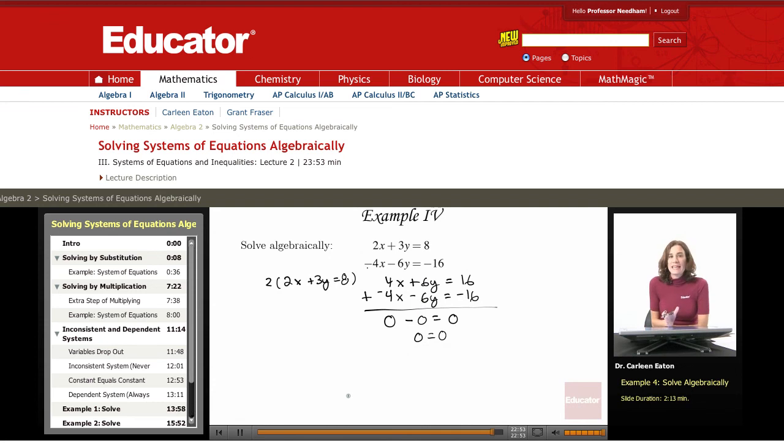And I didn't make any mistakes. I did everything correctly, but then all my variables went away. And what this tells me is that I have a dependent system, and it has an infinite number of solutions.